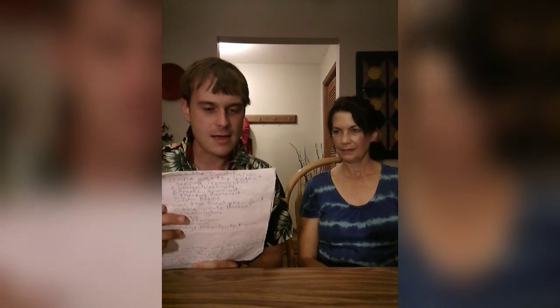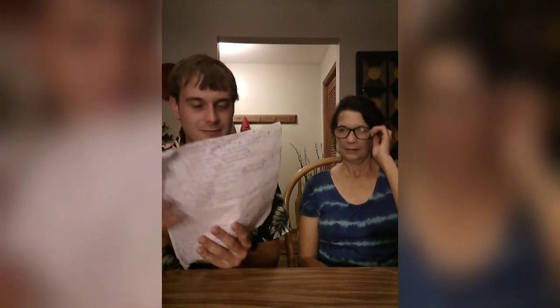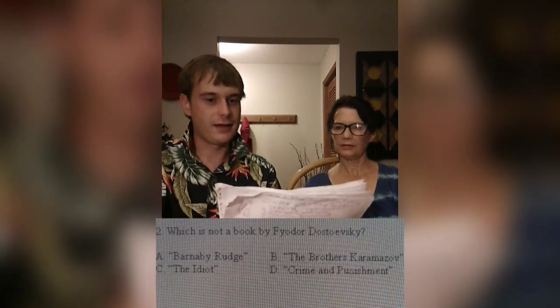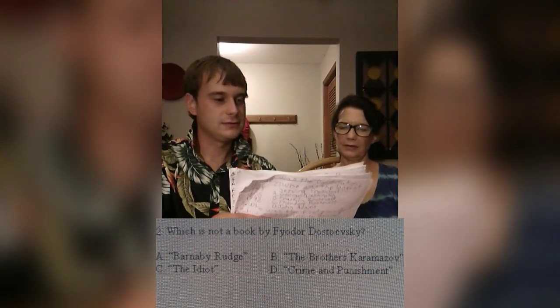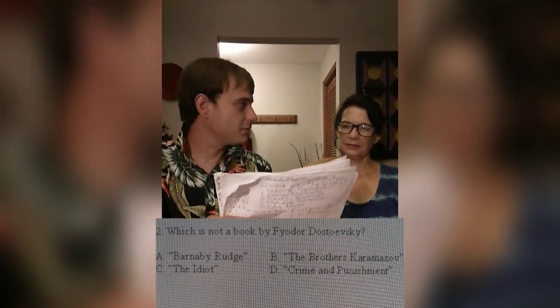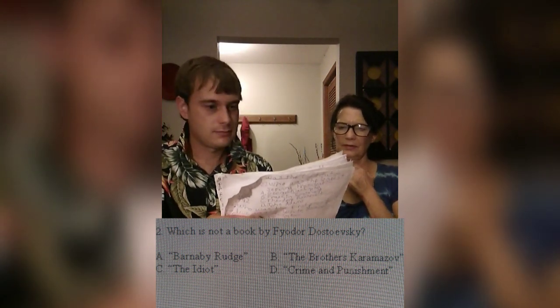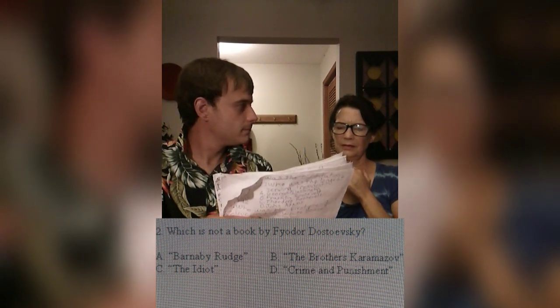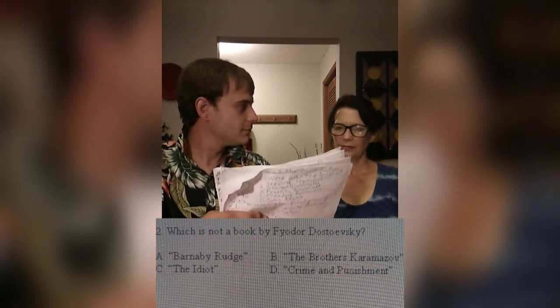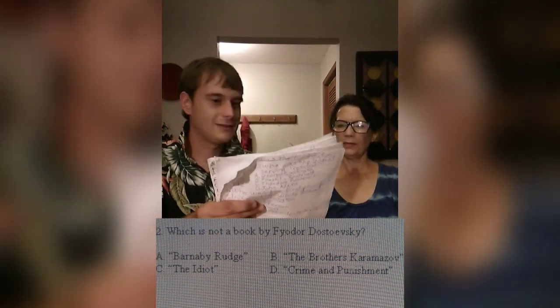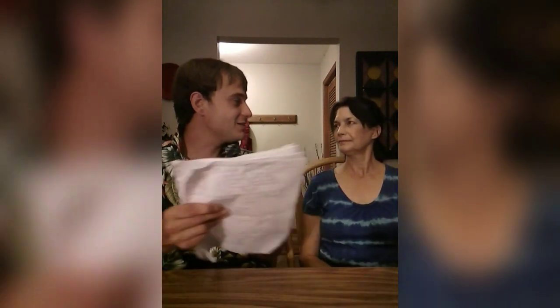Question number two: Which is NOT a book by Fyodor Dostoevsky? Is it A, Barnaby Rudge; B, The Brothers Karamazov; C, The Idiot; or D, Crime and Punishment? She recalls reading The Brothers Karamazov and guesses Crime and Punishment is not by Dostoevsky. That is incorrect — it was actually Barnaby Rudge, which was written by Charles Dickens. She now has one strike but is still in the game.